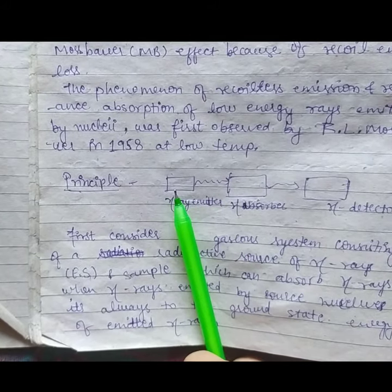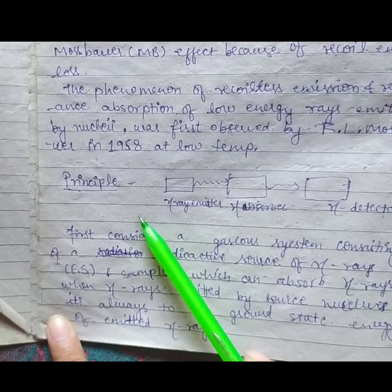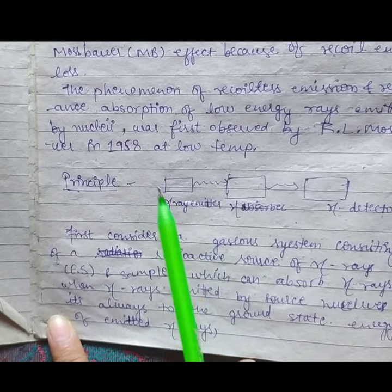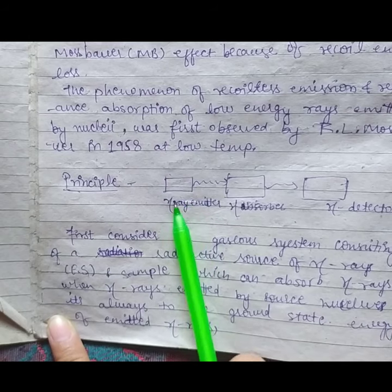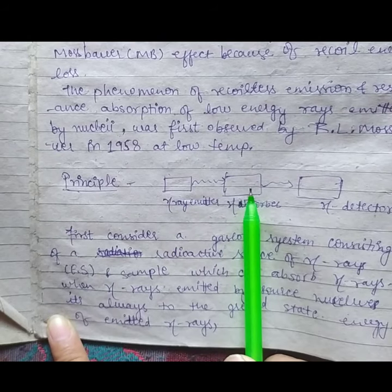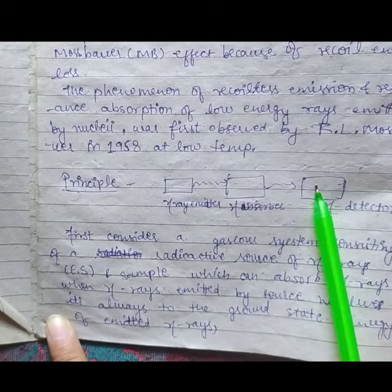Now we are going to study the principle of Mössbauer spectroscopy. This is our small diagram. Let me explain you. This is our gamma ray emitter, this is gamma absorber, and it is gamma detector.